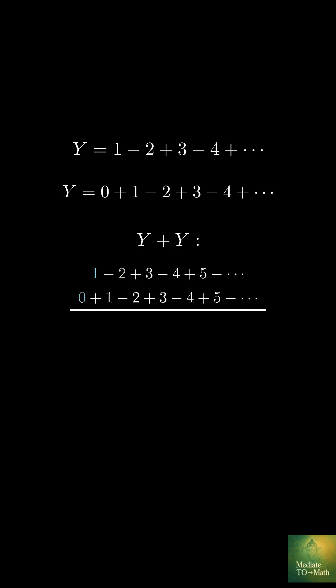When we add them together, 1 plus 0 equals 1. Negative 2 plus 1 equals negative 1. 3 plus negative 2 equals 1. Negative 4 plus 3 equals negative 1. And this pattern continues. Look what happened.